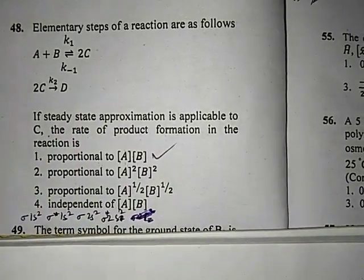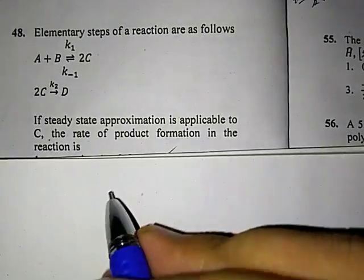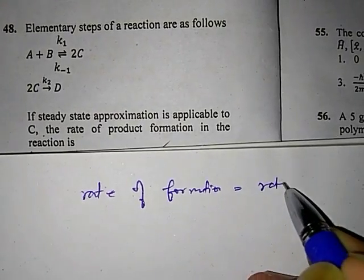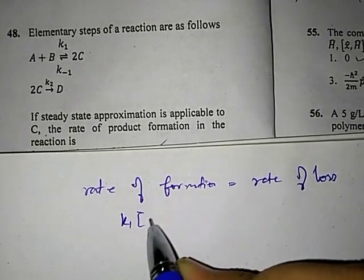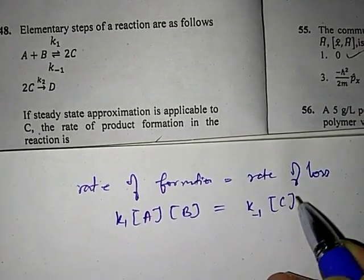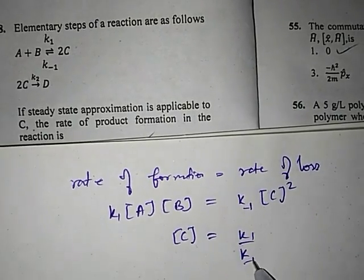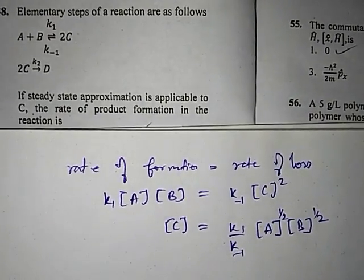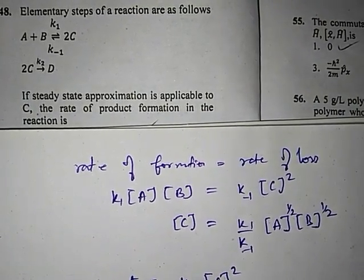For the first step we have A + B on one side and C on the other. Applying steady state approximation: rate of formation of C equals rate of loss. Rate of formation of C is k₁[A][B], and rate of loss of C is k₋₁[C]². Solving for C gives [C] = (k₁/k₋₁)^(1/2) [A]^(1/2)[B]^(1/2). The rate of reaction is given by k₂[C]².